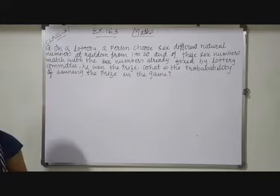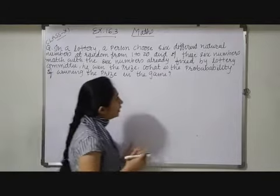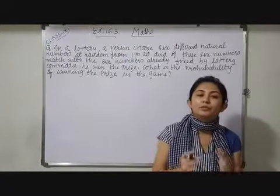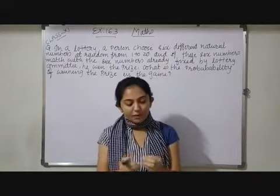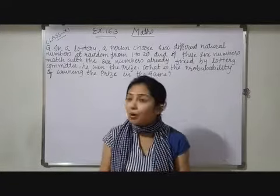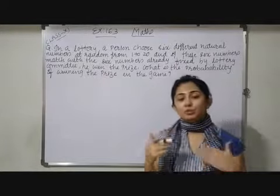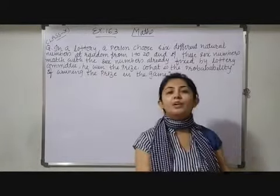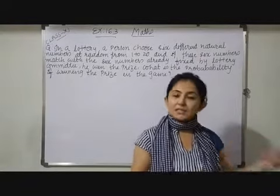So what is the probability of winning the prize game? Now here first of all children you have to determine how many combinations can be formed using 1 to 20. Because using 1 to 20 there are different combinations we can form of 6 numbers.